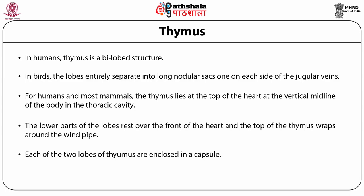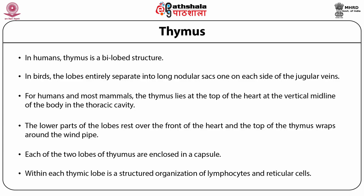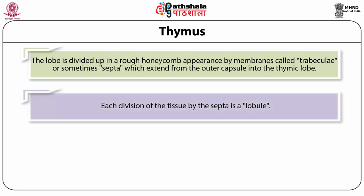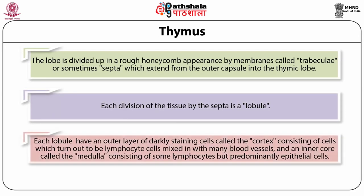Each of the two lobes of the thymus is enclosed in a capsule. Within each thymic lobe is a structured organization of lymphocytes and reticular cells. The lobe is divided up in a rough honeycomb appearance by membranes called trabeculae or septa, which extend from the outer capsule into the thymic lobe. Each division of the tissue by the septa is a lobule. Each lobule has an outer layer of darkly staining cells called the cortex, consisting of lymphocyte cells mixed with many blood vessels.